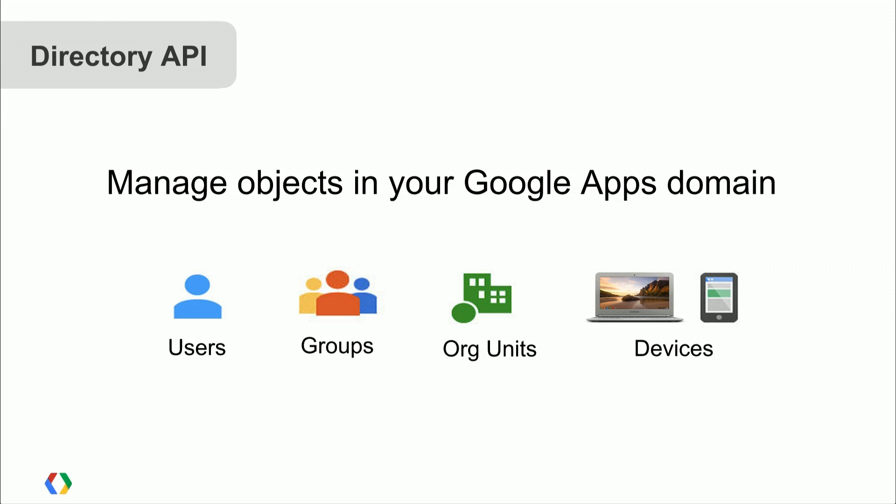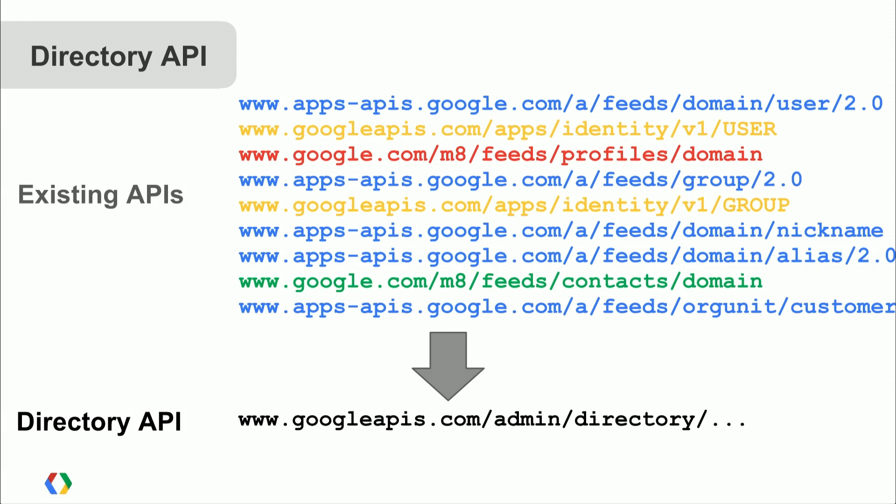Here are common endpoints you'd use today — things like the provisioning API or the profiles API. We're boiling all of these down into a single API called the Directory API. All those endpoints roll up into one. This moves us toward the simplicity goal we have for the Admin SDK.